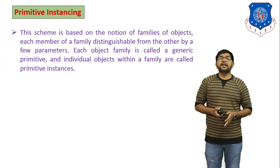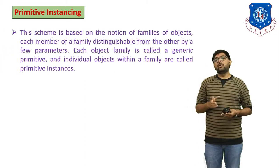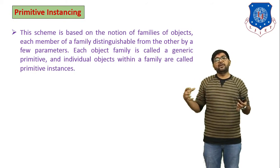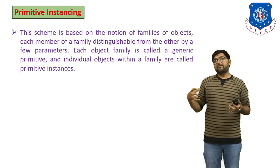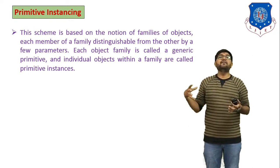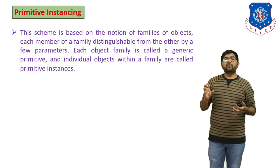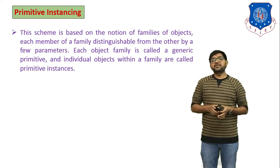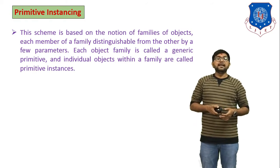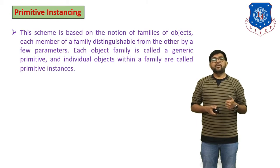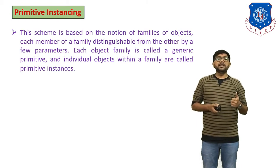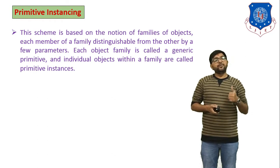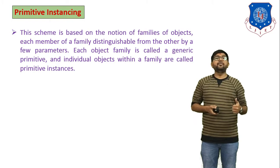The second method is primitive instancing. In primitive instancing, we combine a number of parts into groups, into a family. This scheme is based on the notion of a family of objects, where each member of the family is distinguishable from the others by a few parameters. Each object family is called a generic primitive, and individual objects within a family are called primitive instances.